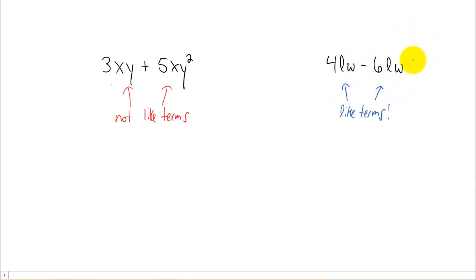They're both 1. So what we can do is we can combine those like terms by adding the coefficients. Or in this case, subtracting the coefficients. We have 4LW minus 6LW, and 4 minus 6 is negative 2. So you can combine these two to get negative 2LW.